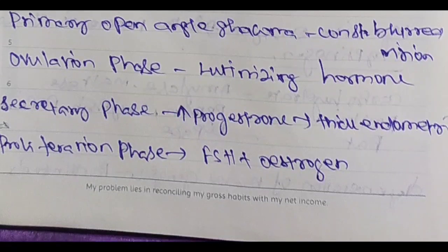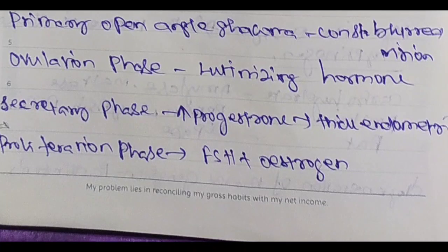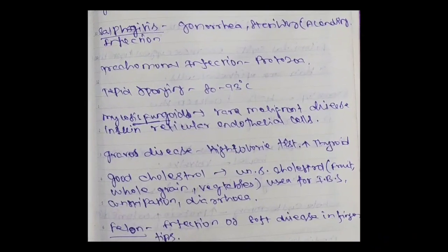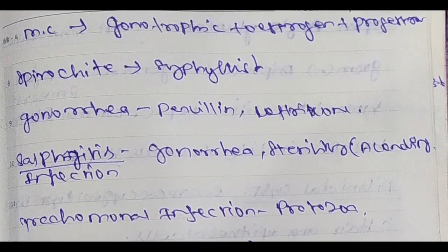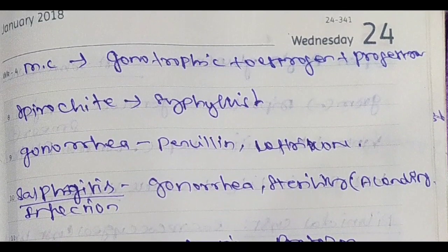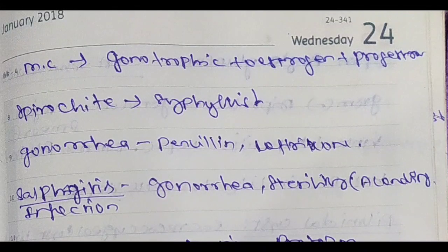So the proliferation phase: estrogen. Secretory phase: progesterone. Ovulation phase: luteinizing hormone. So the menstrual cycle — gonadotrophic hormones: estrogen plus progesterone.